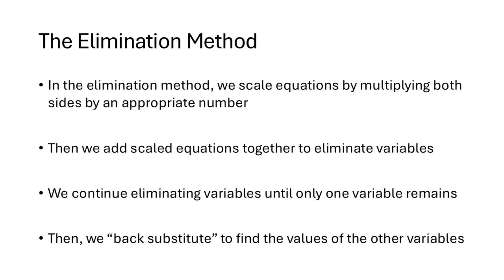So what is the elimination method? In the elimination method, we scale equations by multiplying both sides by an appropriate number. Then we add those scaled equations together to eliminate variables — to get variables to cancel out. We continue eliminating variables until only one variable remains, and then, similar to the substitution method, we substitute those values back into our prior equations to eventually get a value for each variable.